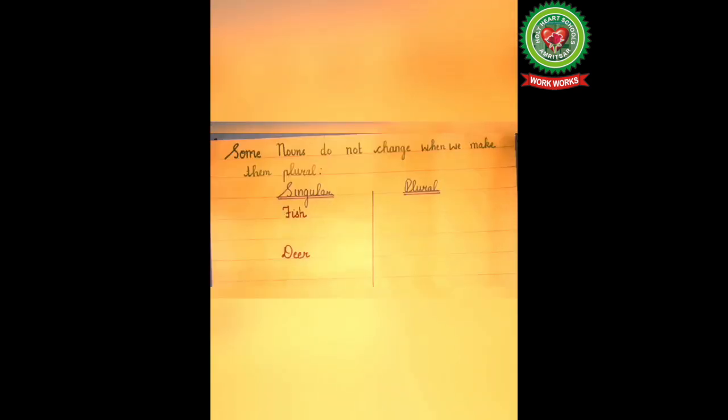Children, you have seen some nouns form their plurals by a change of vowel only. Now, we will discuss the next rule. The rule is some nouns do not change when we make them plural. Let us discuss some examples.